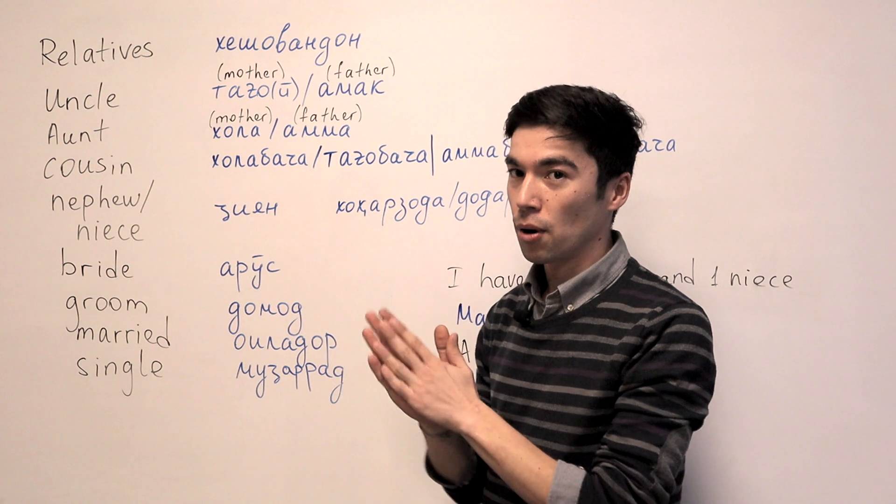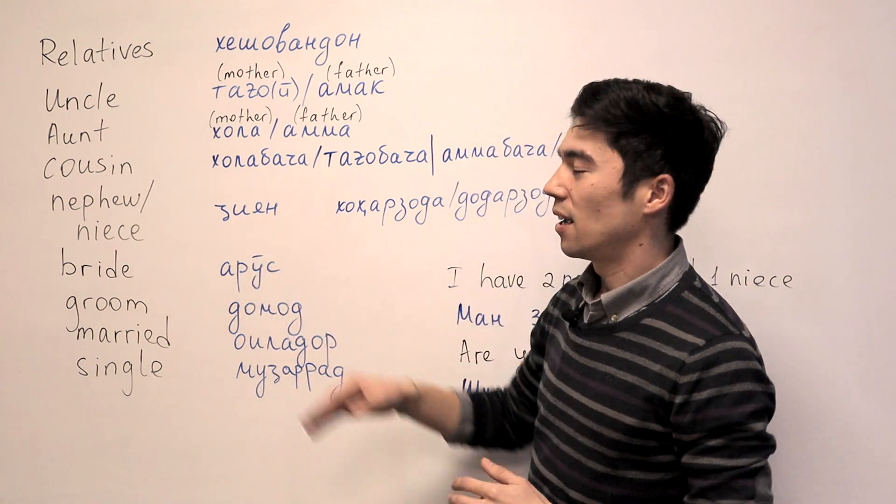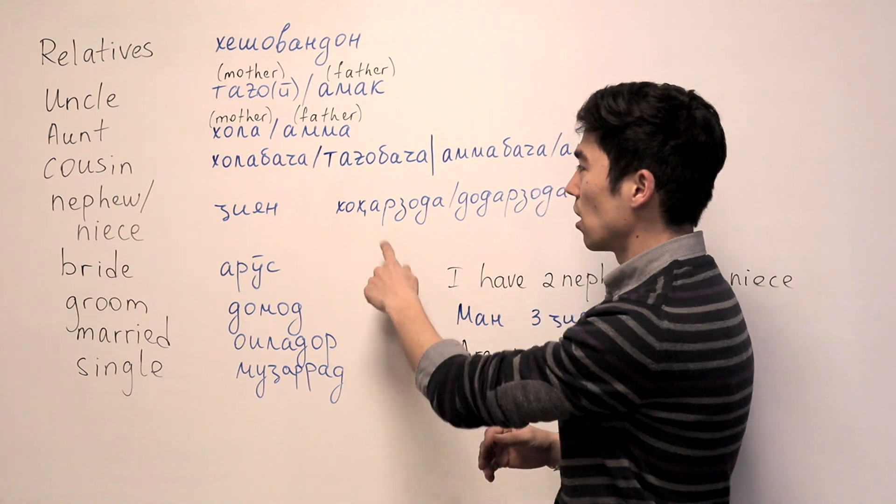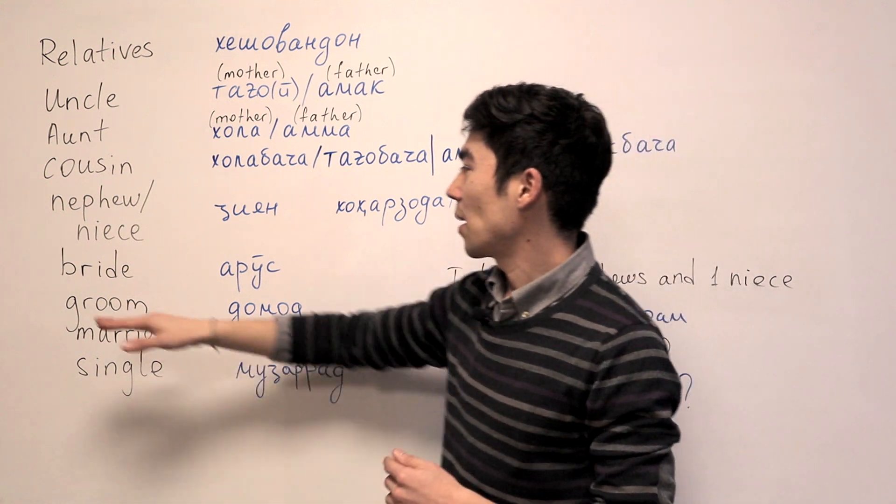Nephew, niece, both. We just say Jihan. And in some places, in the south probably, Khohar Zoda, Dodar Zoda.